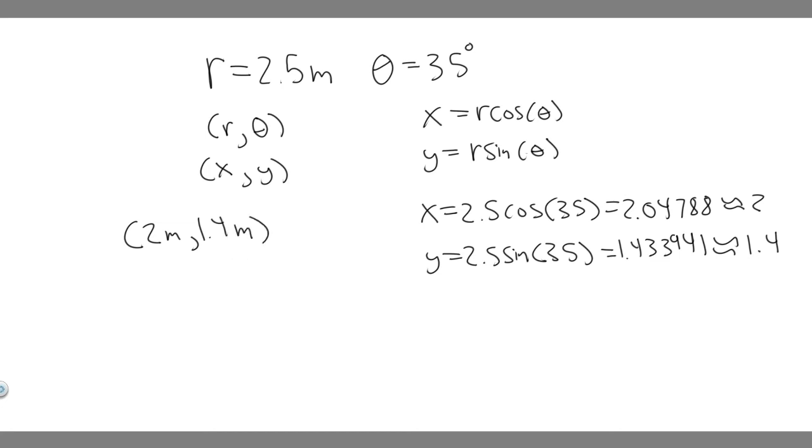So this right here is going to be the rectangular coordinate: 2 meters comma 1.4 meters. So this is the x comma y. So this is your answer and hopefully you found this useful.